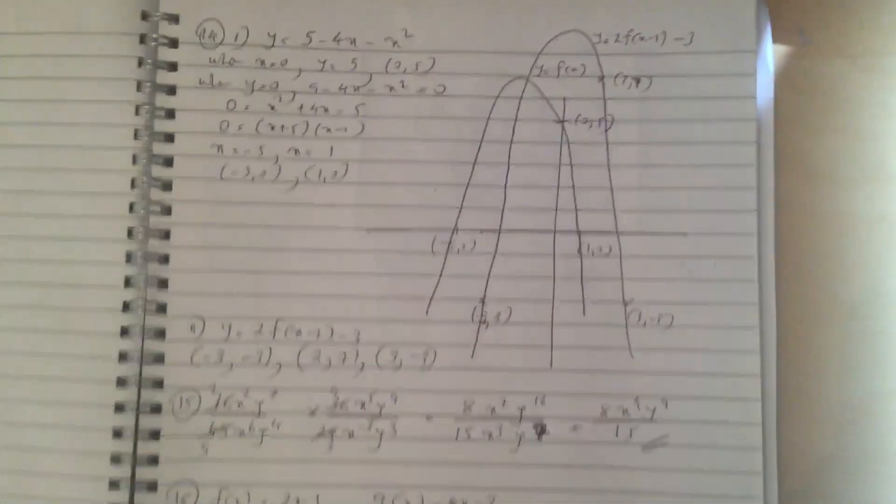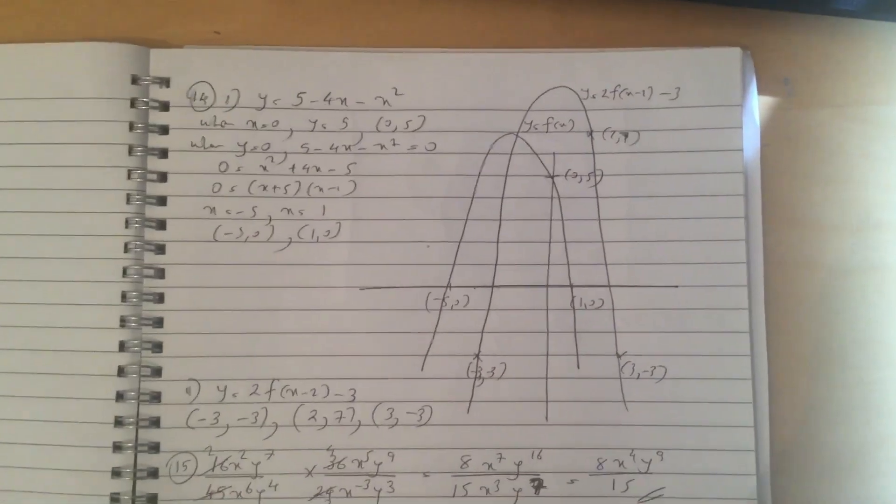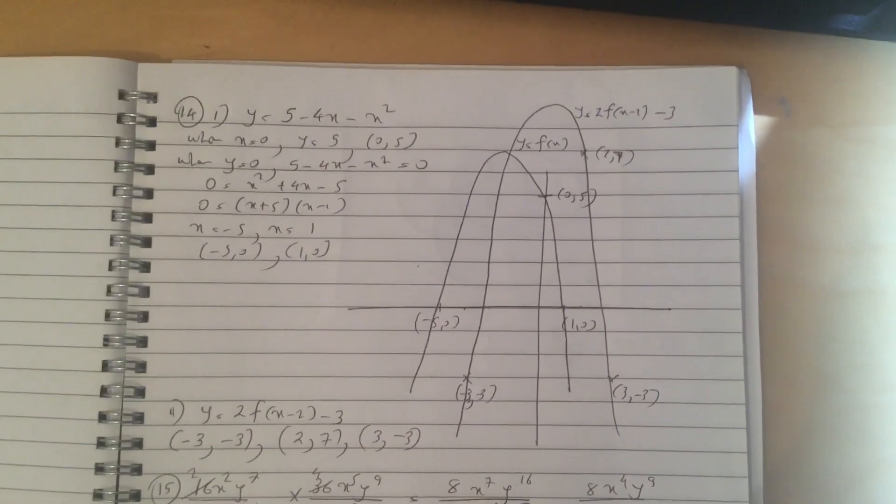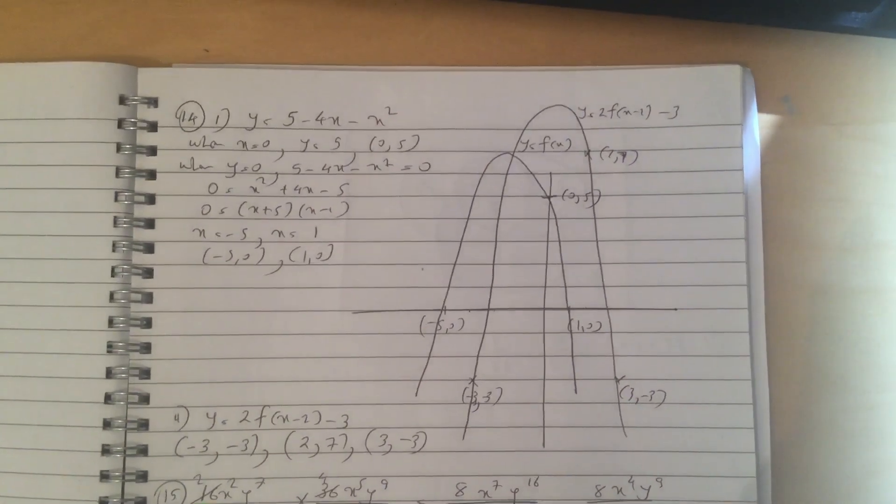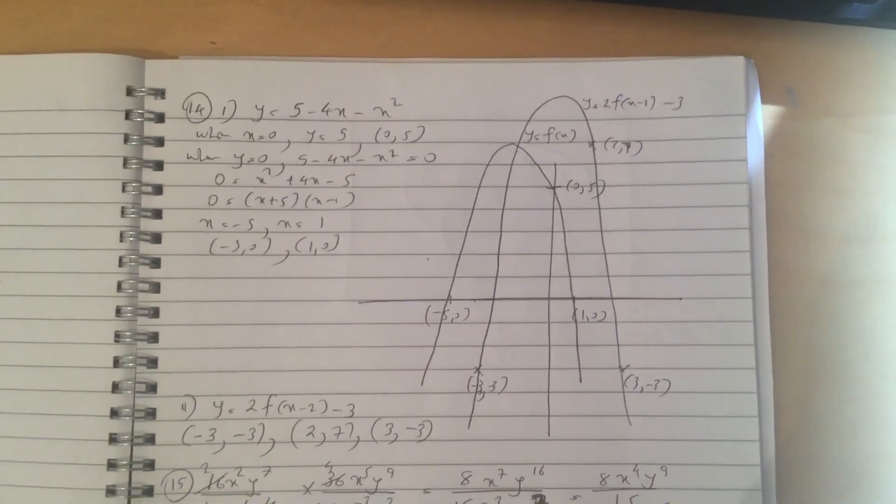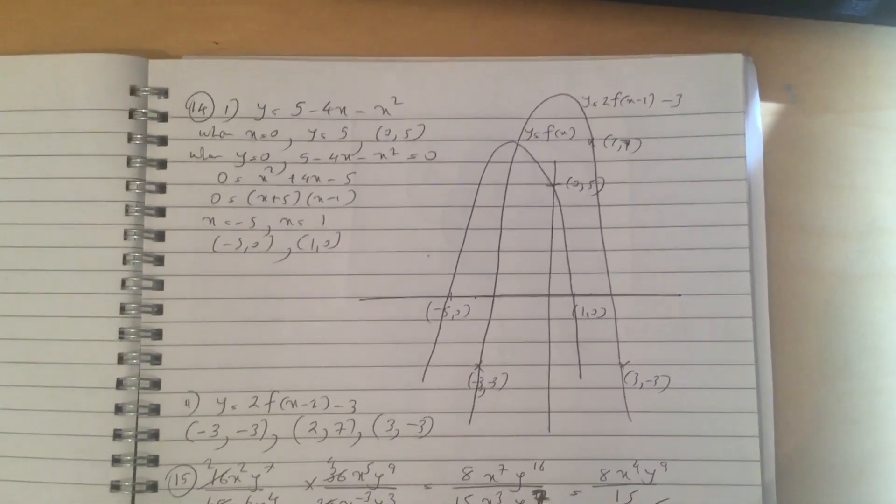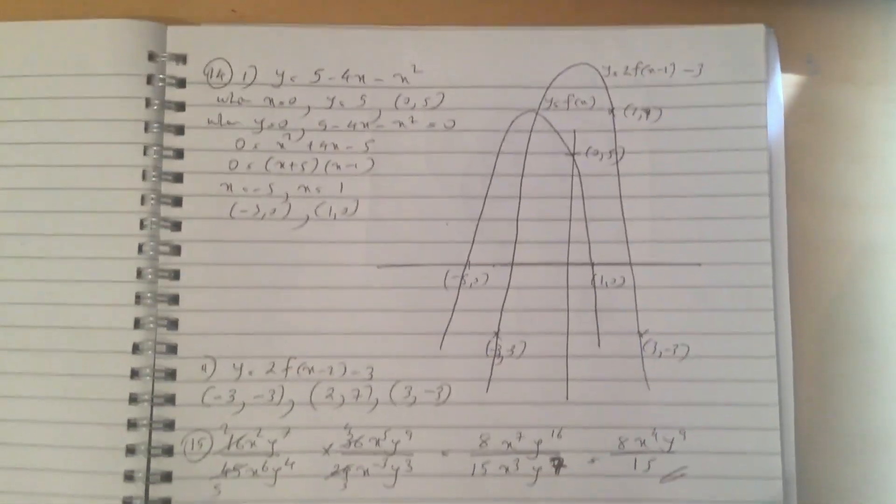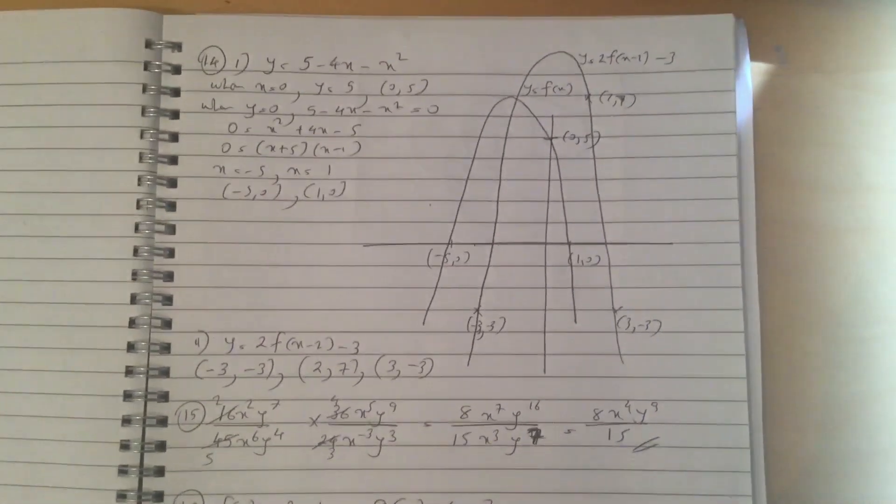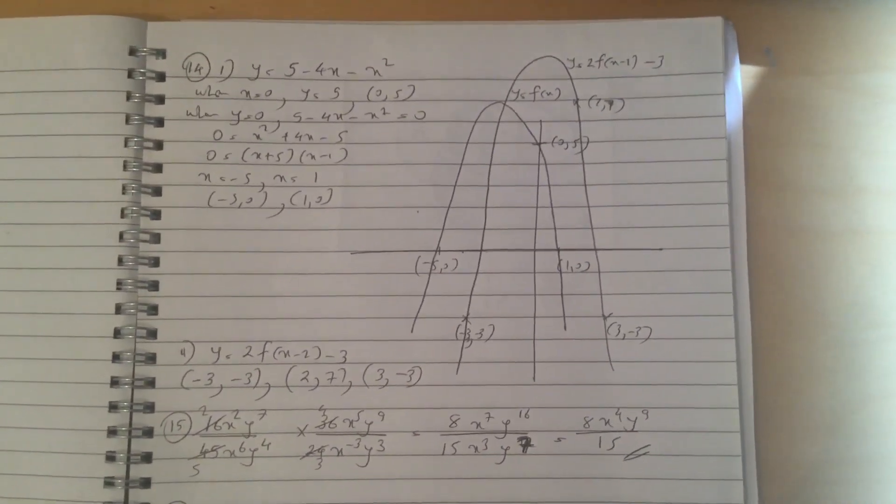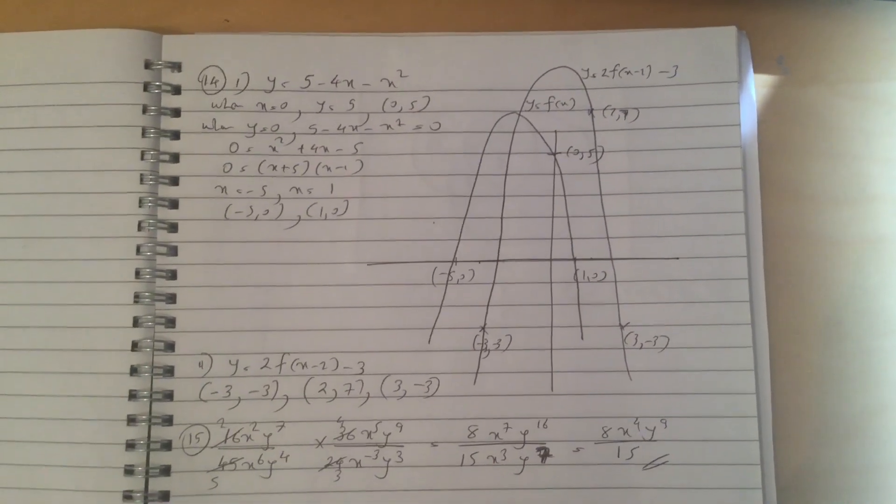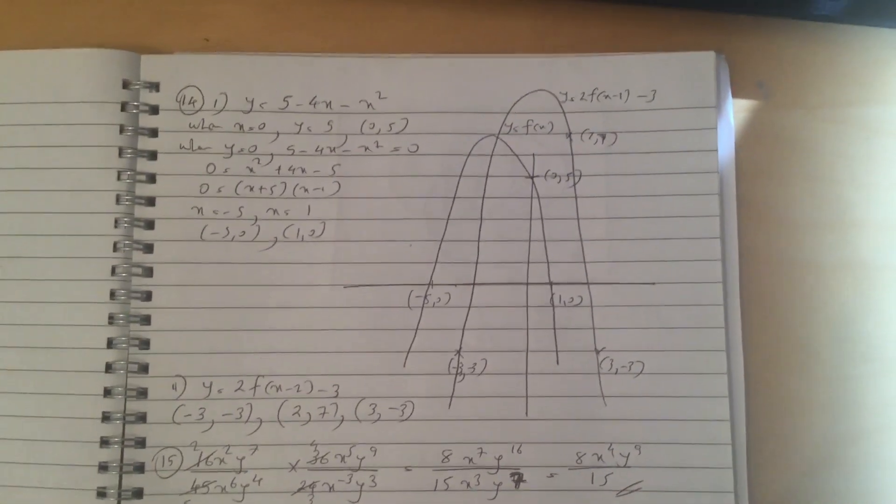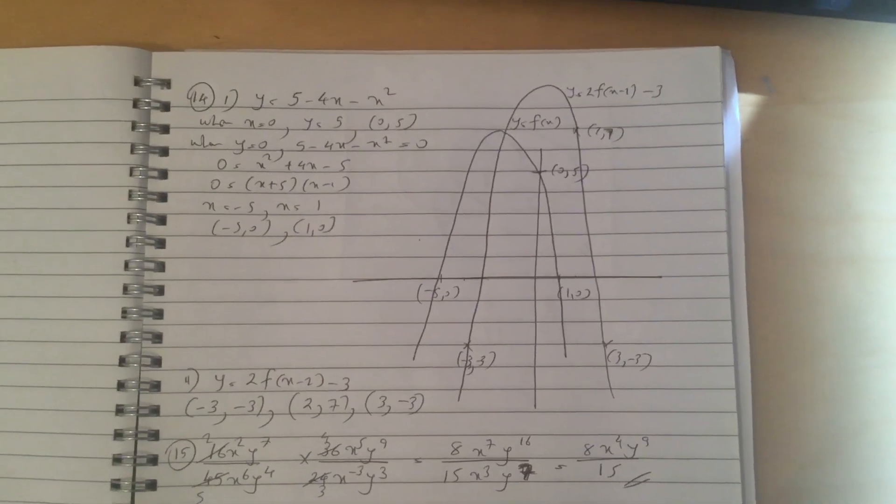Question 14. So this is about sketching graphs. First of all, you work out the Y-intercept, which is 0, 5, and then the X-intercept by factorizing, which is minus 5, 0, 1, 0, and then you draw the graph. And then to get the Y equals 2F of X minus 2 minus 3, you just translate the points, or transform the points, and then you draw that graph as well on the same diagram. So just go through it and just check.